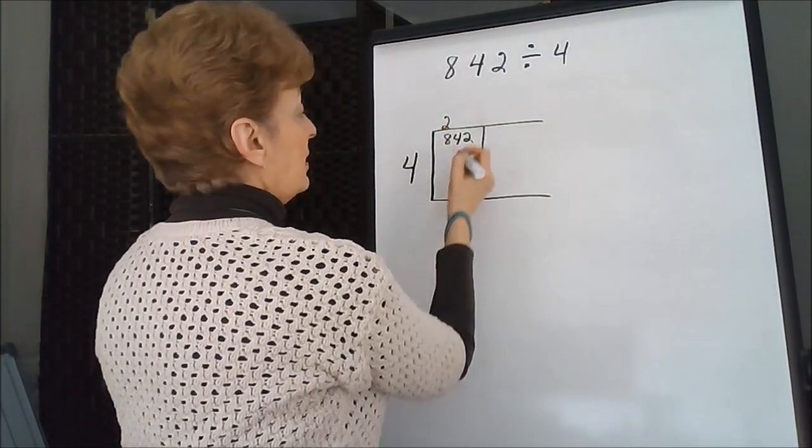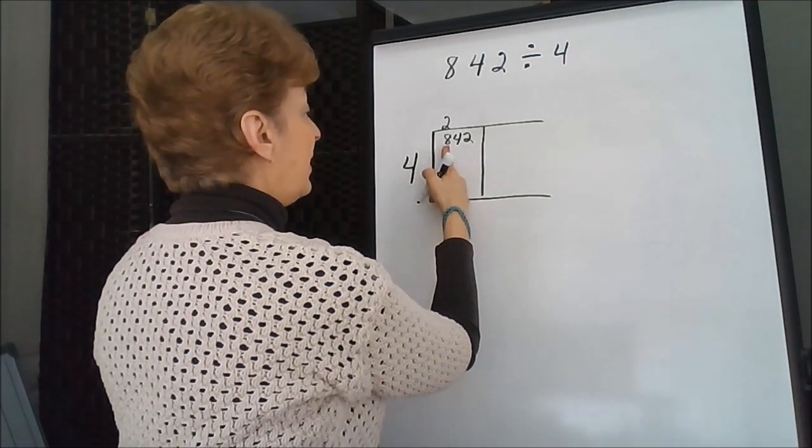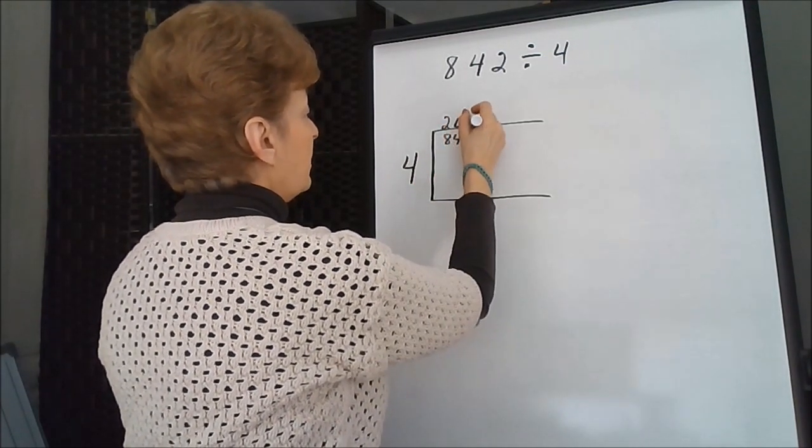What we're really saying is 200 because 4 is going into 842. So we'll do this.